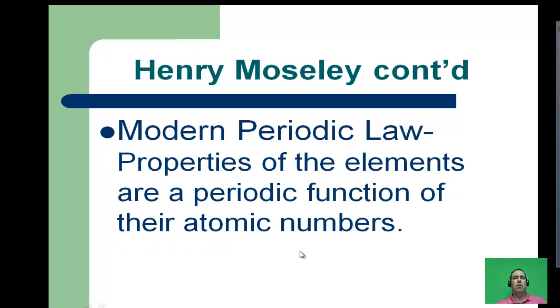When you organize it by increasing atomic number, he had to modify Mendeleev's periodic law to come up with the modern periodic law. The modern periodic law states that the properties of the elements are a periodic function of their increasing atomic numbers. The chemical and physical properties of the elements are a repeating pattern when we organize them by atomic number.